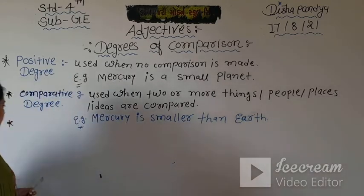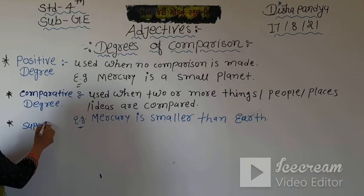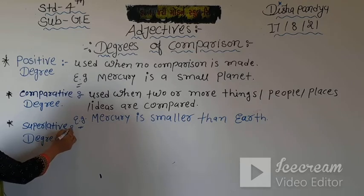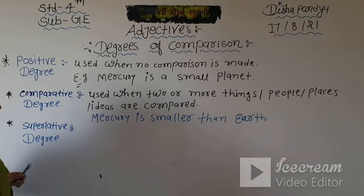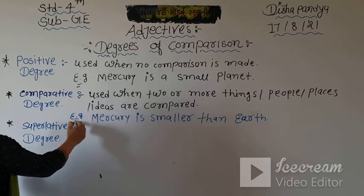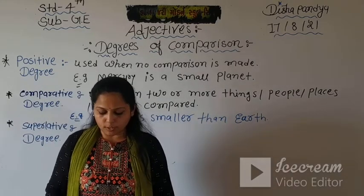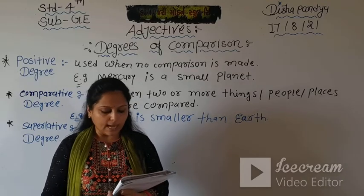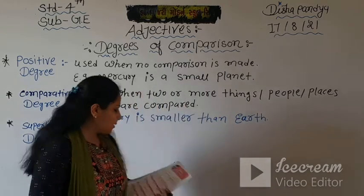When no comparison is made with anyone, we use positive degree. When two objects are compared, we use comparative degree. I hope positive degree and comparative degree are now well understood. Now our last degree - superlative degree.